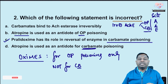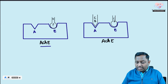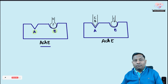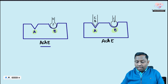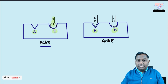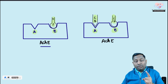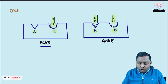Oximes are a class of drugs known as acetylcholinesterase reactivators. Acetylcholinesterase has two important sites: the anionic site and the esteratic site. Both sites must be vacant for normal enzyme function. Organophosphate binds only the esteratic site, while carbamide binds both sites. For oximes to work, the anionic site must be vacant.